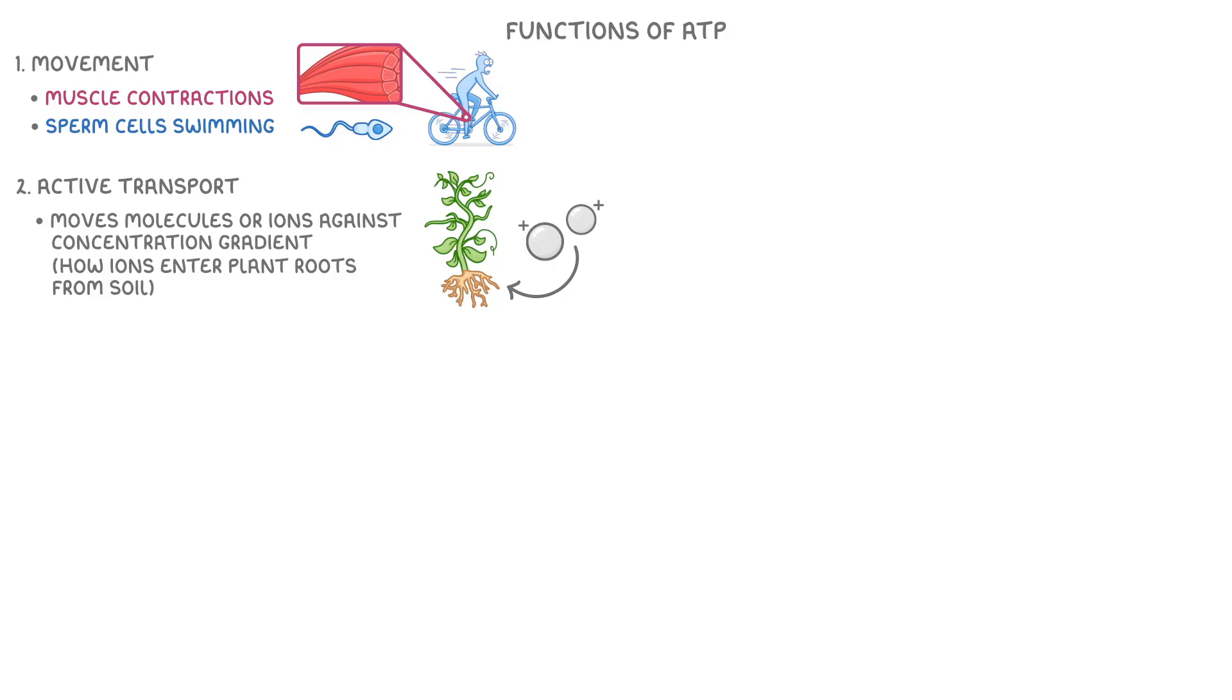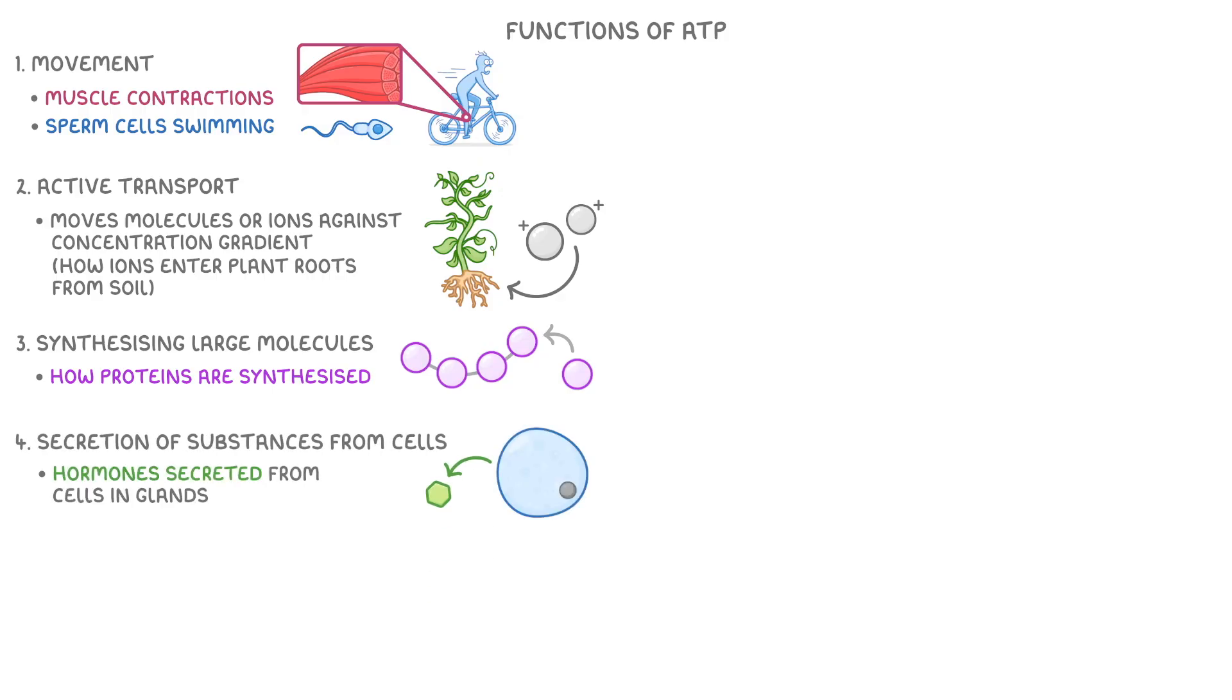Then, thirdly, ATP is needed for synthesizing large molecules from smaller ones, just like how proteins are synthesized. It's also involved in the secretion of substances from cells, for instance when hormones are secreted from cells within glands.